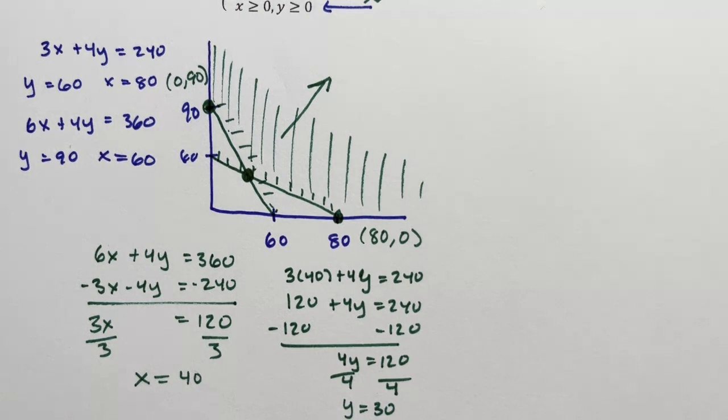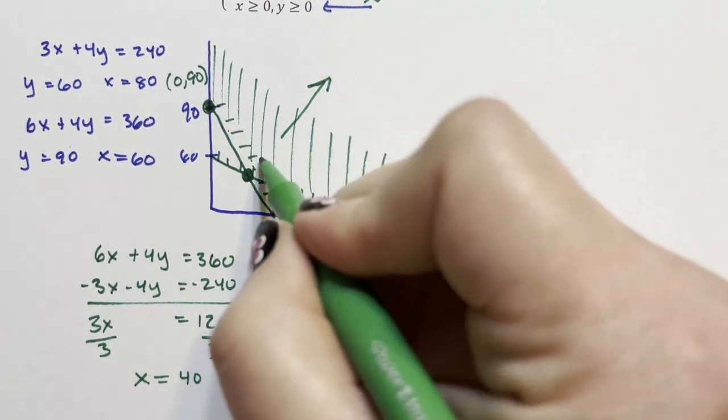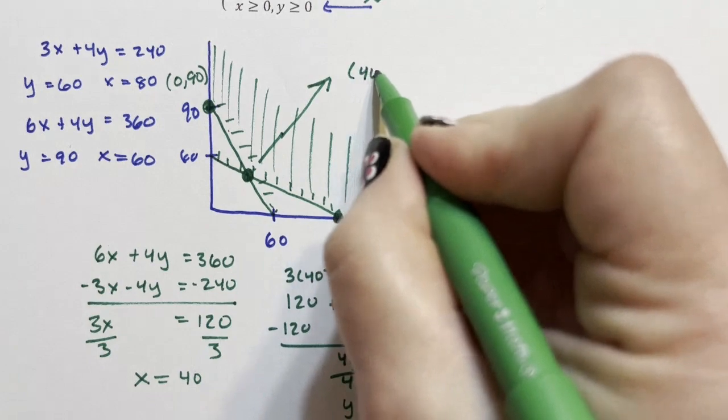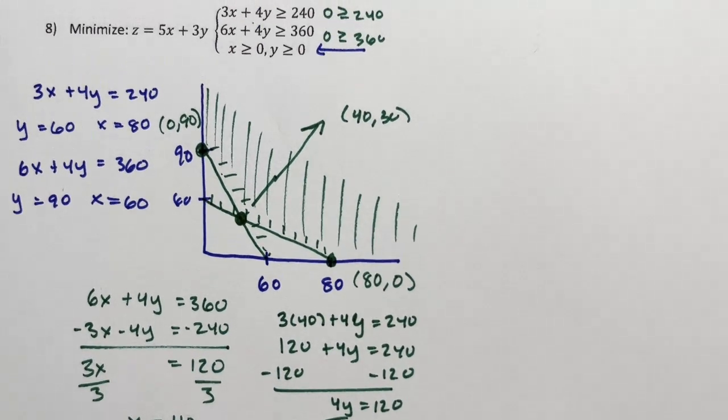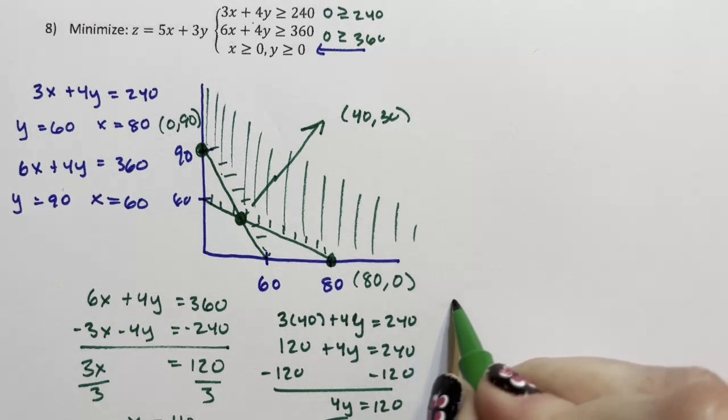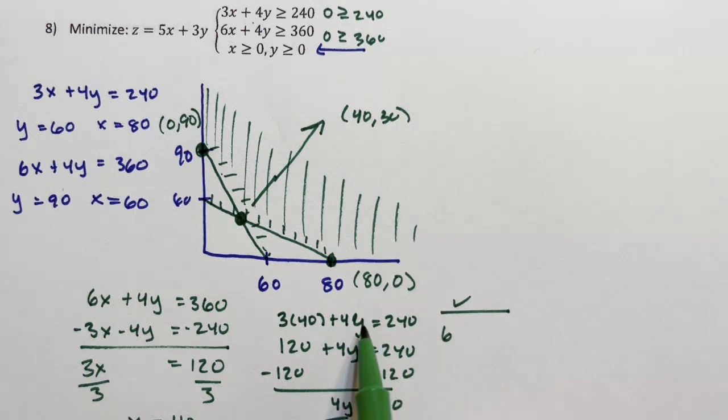And then I'm going to say this point right here is 40, 30. But then I'm going to test. I'm going to check with the second equation. So I substitute it into the first, I'll test with the second.